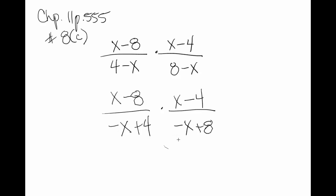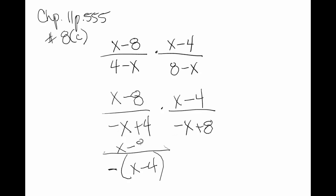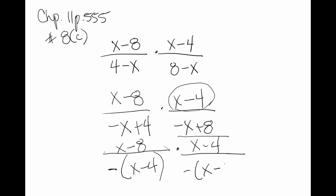I notice at this point that I can rewrite this as negative x minus 4. If I were to apply the distributive property here, negative x and then negative times negative would make a plus, so I'd end up with negative x plus 4. So I'm going to rewrite this expression with the negative on the outside — that's called factoring out a negative 1. What that does is gives me something that will cancel with the x minus 4 up there. Turns out I can do the same thing over here with the negative x plus 8 — this is the same thing as negative x minus 8.